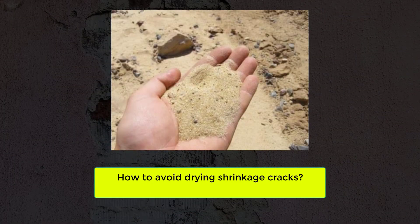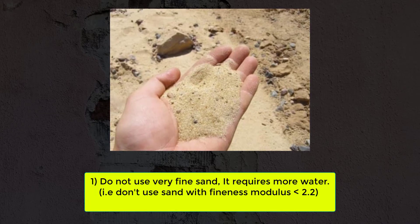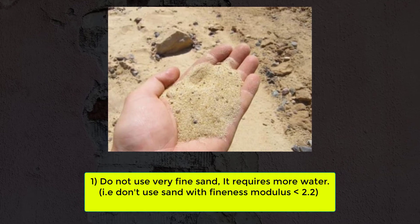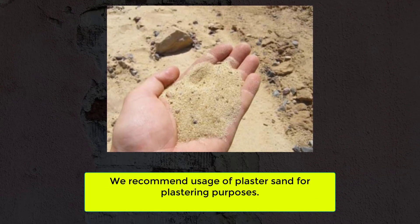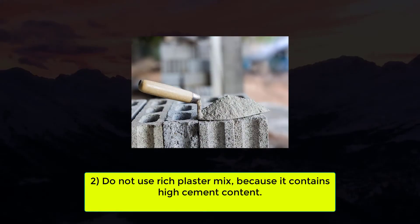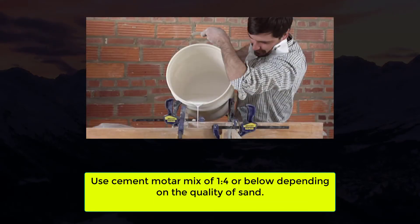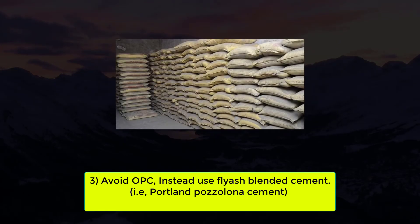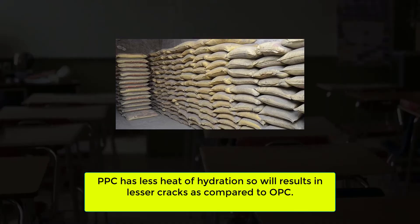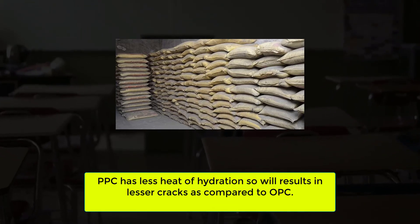How to avoid drying shrinkage cracks: do not use very fine sand, as it requires more water — that means don't use sand with a fineness modulus less than 2.2. We recommend using plaster sand for plastering purposes. Do not use a rich plaster mix because it contains high cement content. Use a cement mortar mix of 1:4 ratio or below depending on the quality of sand. Avoid OPC; instead use fly ash blended cement — that is Portland Pozzolana Cement (PPC) — as PPC has less heat of hydration and will result in fewer cracks compared to OPC.